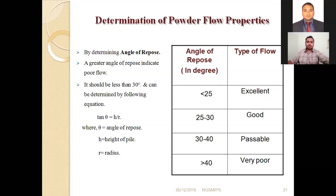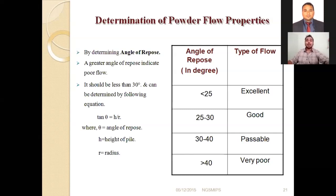Powder flow properties are mainly determined by calculating the angle of repose. I have demonstrated how to determine the angle of repose. If the angle of repose is less than 25 degrees, then the type of flow is excellent. The formula is: tan θ = h/r, where θ is the angle of repose, h is the height of the pile, and r is the radius.